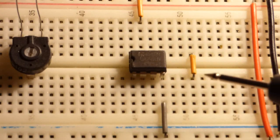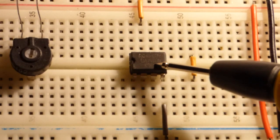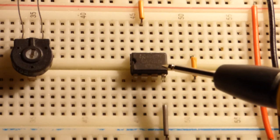Alright, so in this video, we're going to use this 741 op-amp to make a non-inverting comparator.